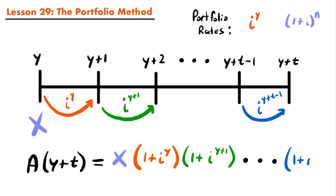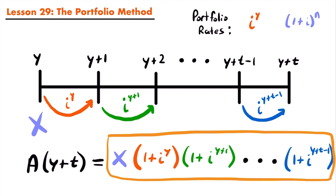So we multiply by (1 + i^(Y+T-1)). This is how you calculate the accumulation for an investment of X in a fund using the portfolio method. Each portfolio rate lasts only one year, so you multiply the investment by the accumulation factor for compound interest for one year with each portfolio rate. Notice that if we want the accumulation at time Y plus T, we do not use the portfolio rate for that final year itself — the last accumulation factor uses the rate for the previous year.